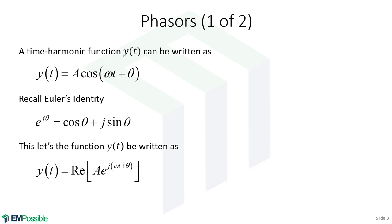Given Euler's identity and given that we have a function that is some amplitude multiplying a cosine, and if we think of this first cosine in Euler's identity as the cosine of our function, that lets us write y(t) slightly differently. We can say that y(t) is the real part of a complex exponential — A times e to the j, with the arguments inside of our cosine.